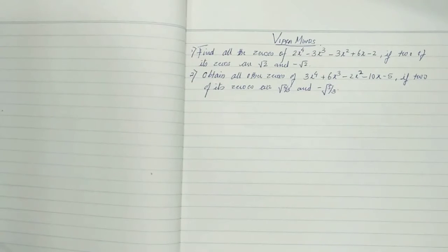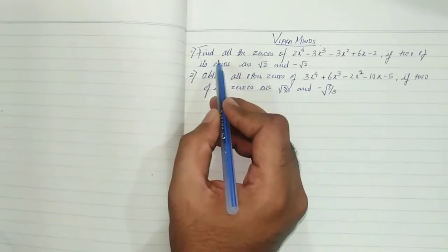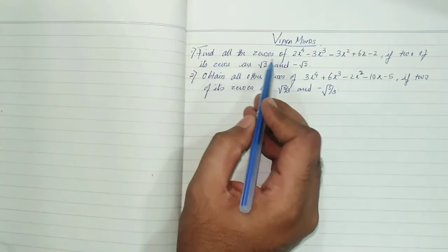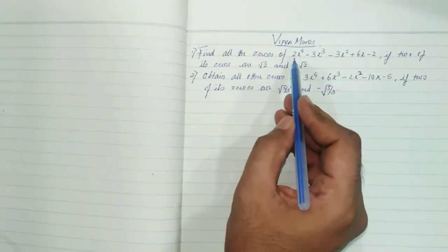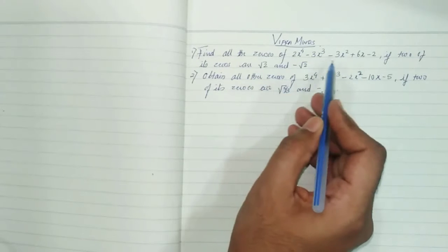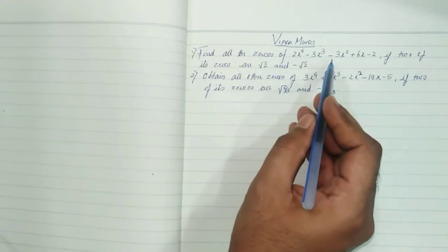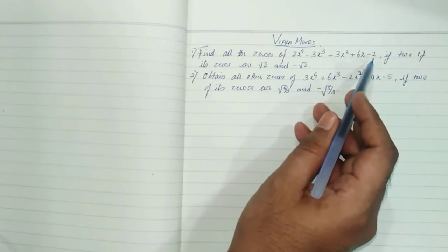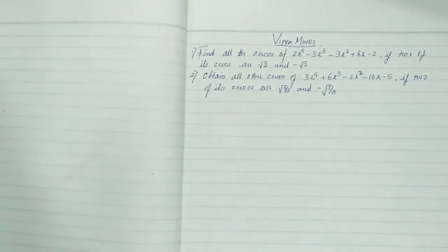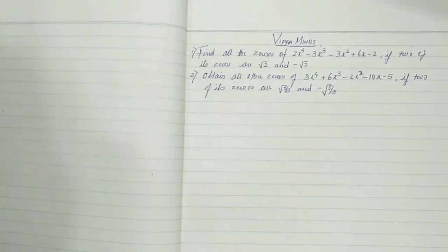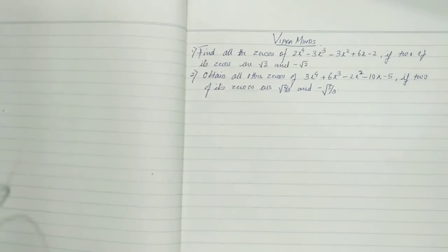Let's start the session. The question is: find all the zeros of a polynomial. This is a biquadratic polynomial, that is 2x⁴ - 3x³ - 3x² + 6x - 2. So what is the degree? 4. It's a biquadratic equation. And two of its zeros are √2 and -√2.